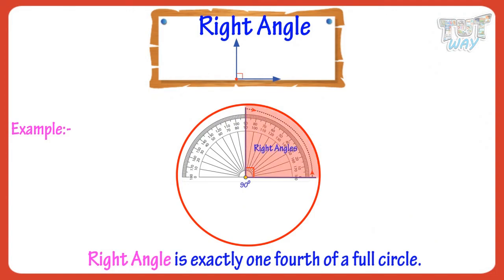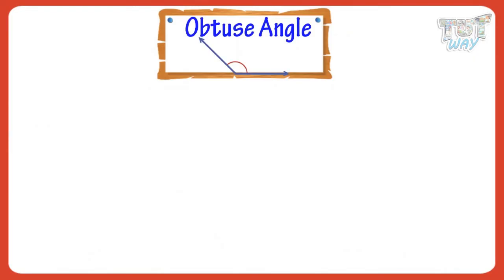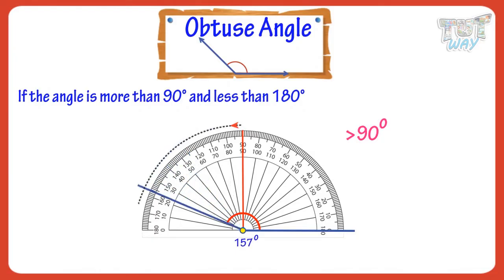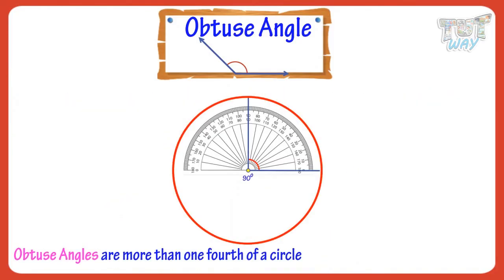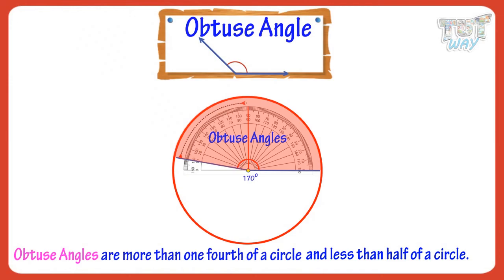Now, let's see what are obtuse angles. If the angle is more than 90 degrees but less than 180 degrees, we call it an obtuse angle. Example of obtuse angles. So, obtuse angles are more than one-fourth of a circle and less than half of a circle.